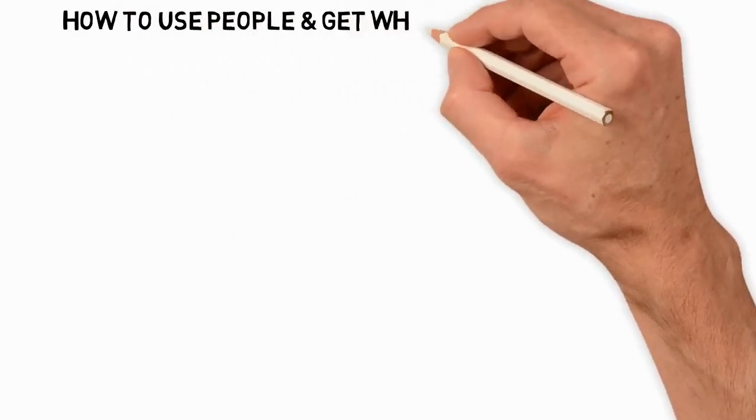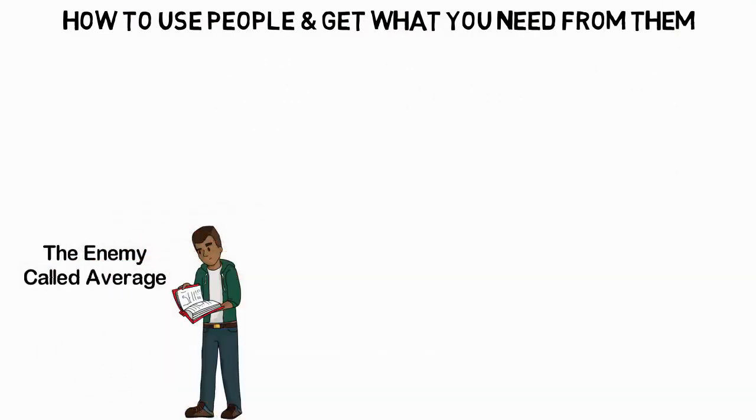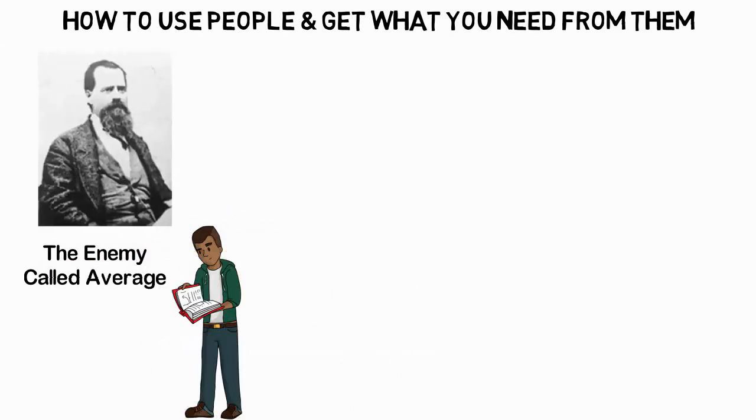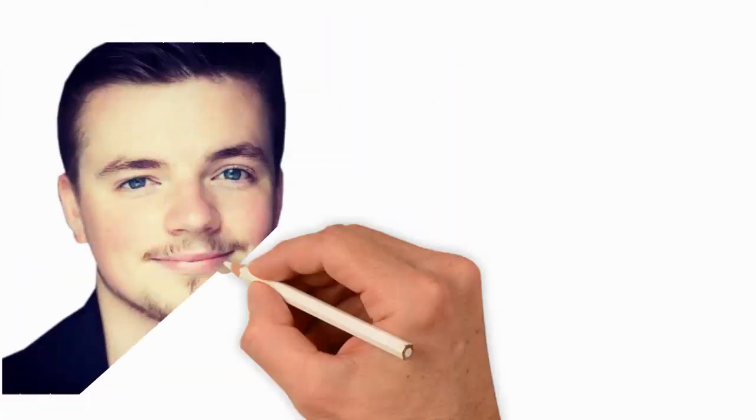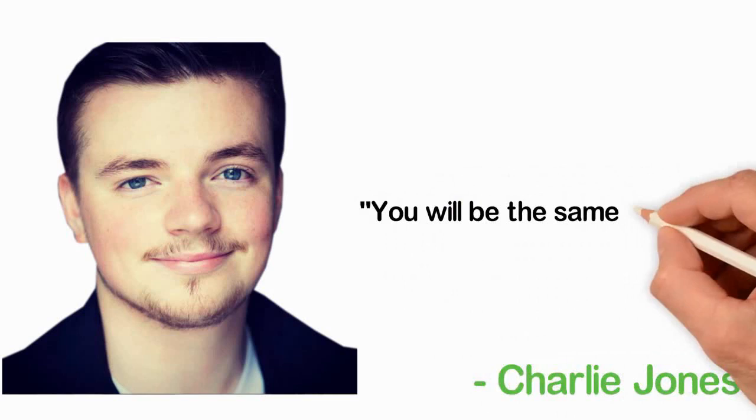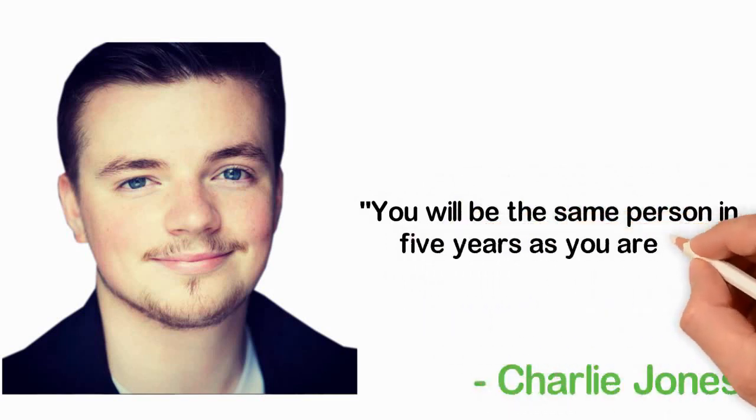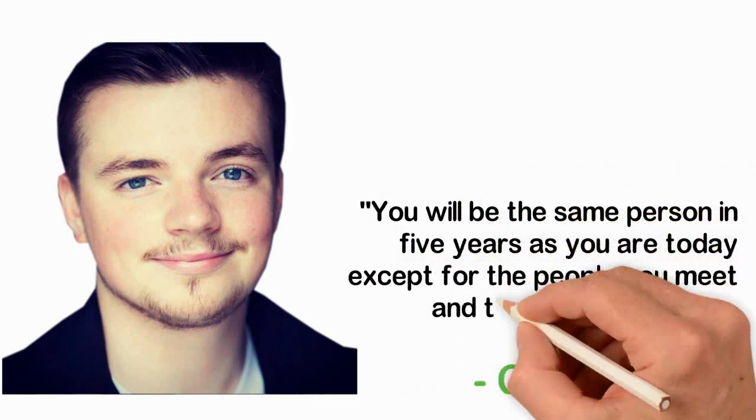How to use people and get what you need from them. When I was a little guy of about 17, I read a book called The Enemy Called Average by John L. Mason. Like most books you read, I can't remember much I learned from this book but one thing stayed with me, a simple quote by Charlie Jones. The quote goes something like, you will be the same person in 5 years as you are today except for the people you meet and the books you read.